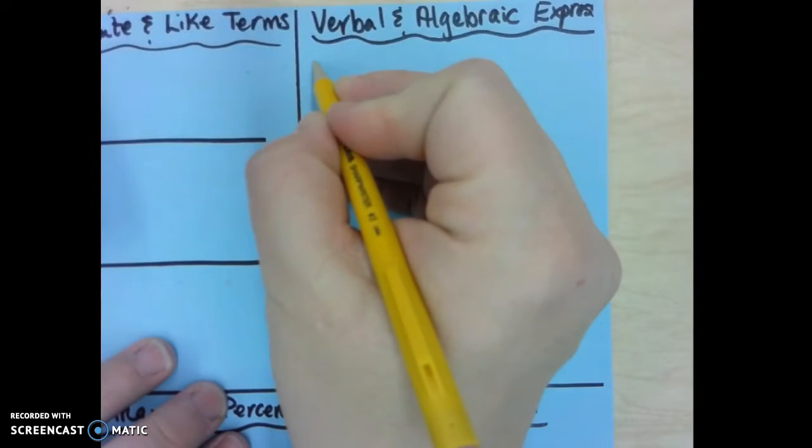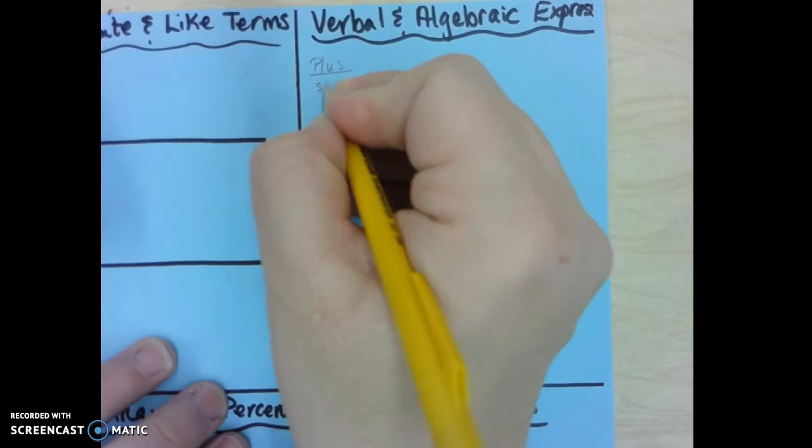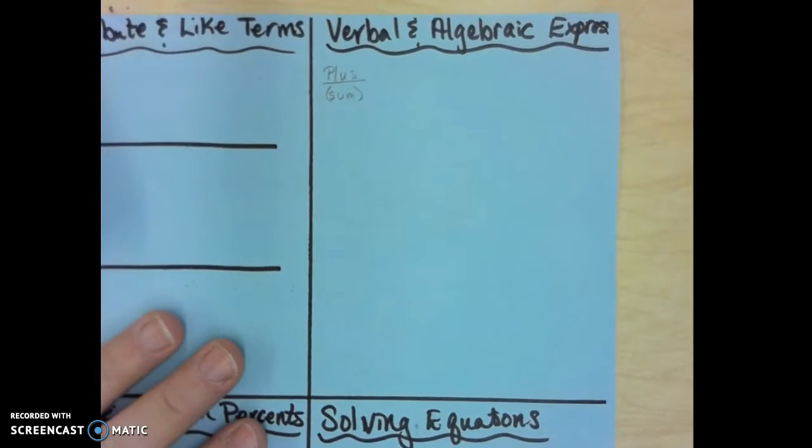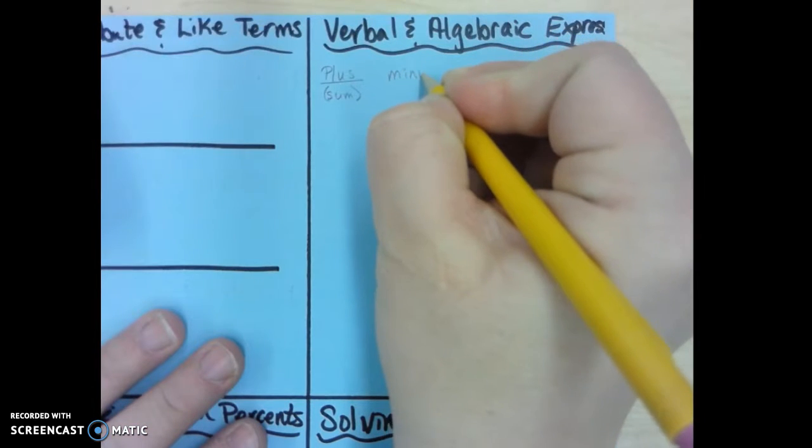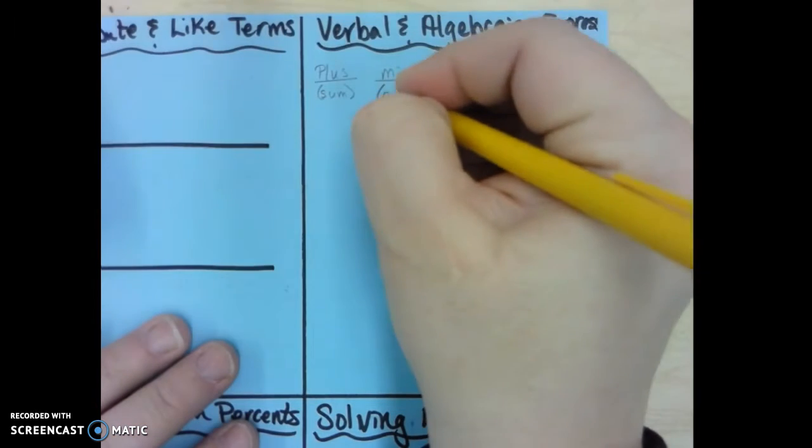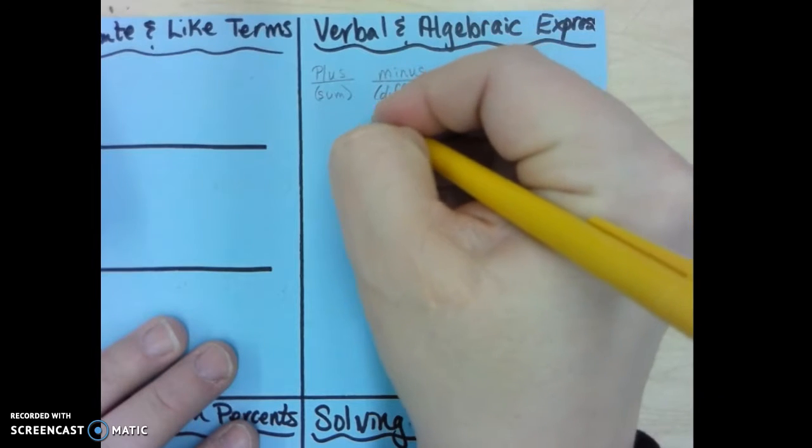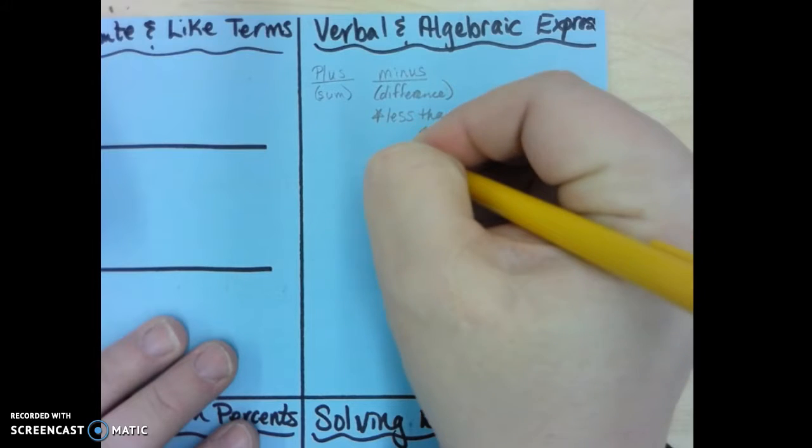So there's some words. You know a lot of the words. We're just going to write down the most important ones. If you notice, sum, and remember that has parentheses, if you have a minus, the word that goes in parentheses is difference. And then remember the other tricky one is less than, and that's backwards.